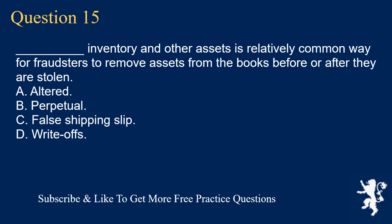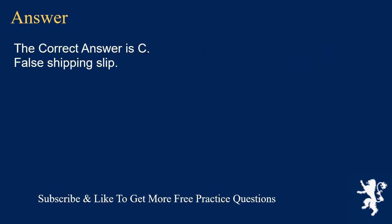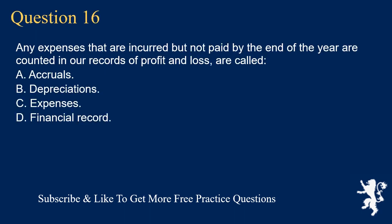Question 15: Underscore inventory and other assets is a relatively common way for fraudsters to remove assets from the books before or after they are stolen. A. Altered. B. Perpetual. C. False shipping slip. D. Write-offs. The correct answer is C. False shipping slip.